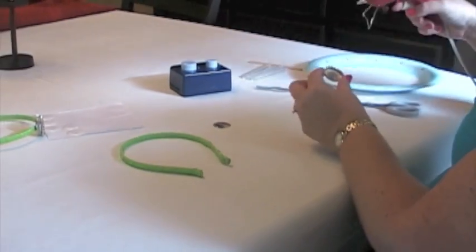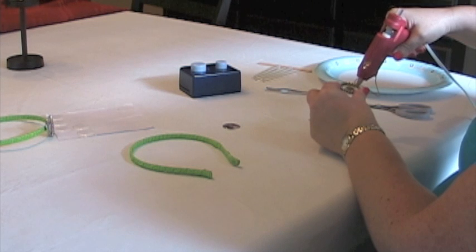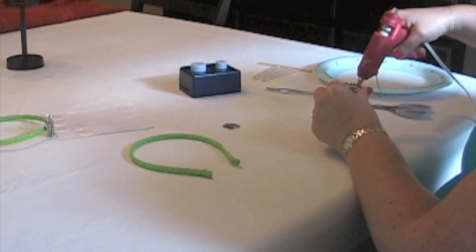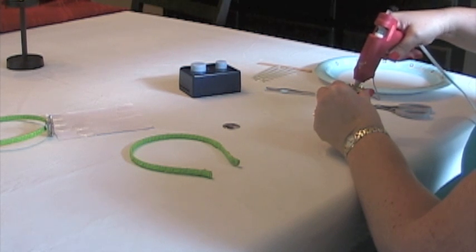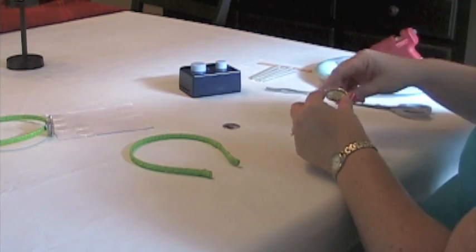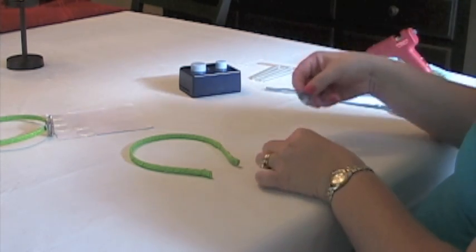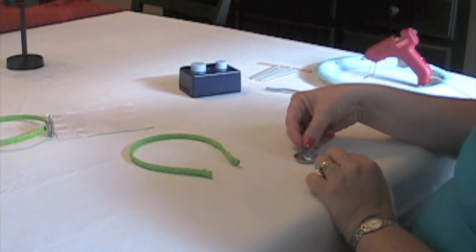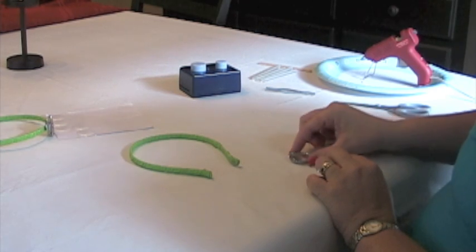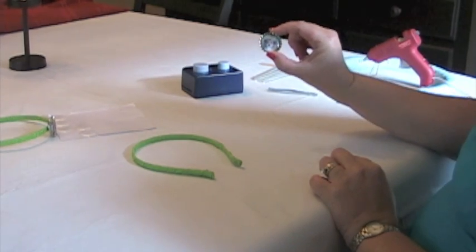Then you take your hot glue and you fill the inside of your bottle cap with the hot glue. And you stick the picture with the epoxy dot right on top and push down. So it looks like that.